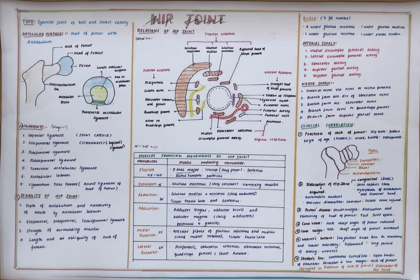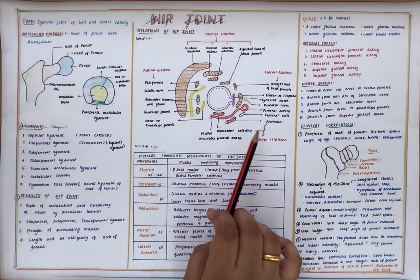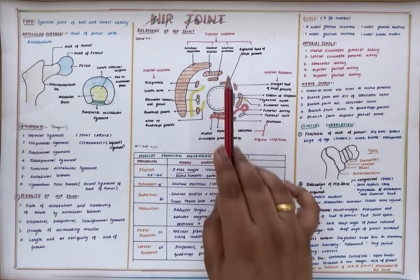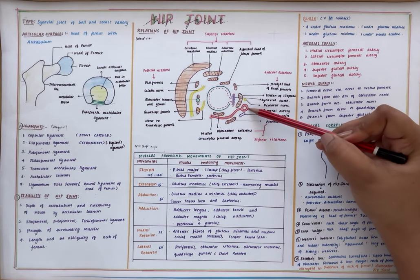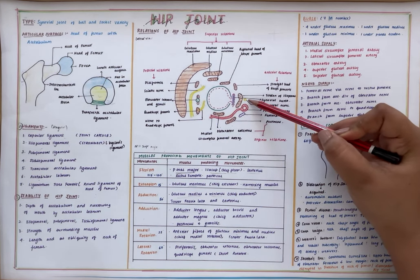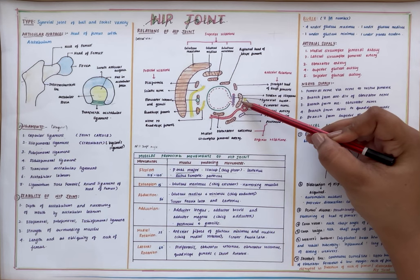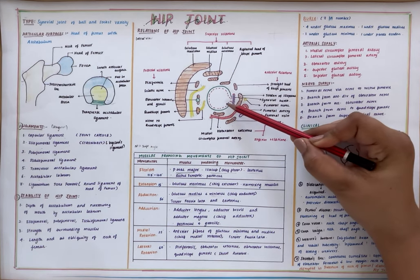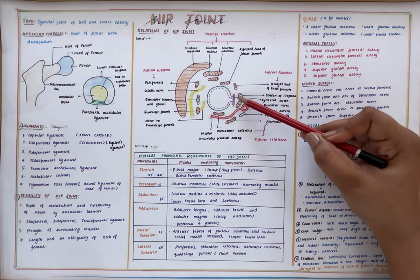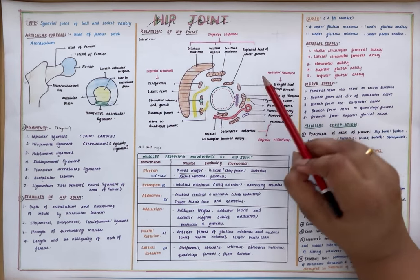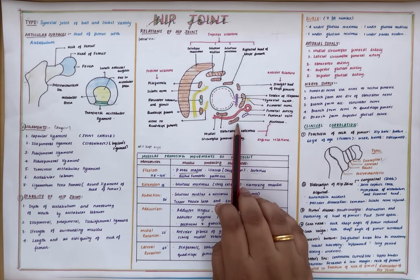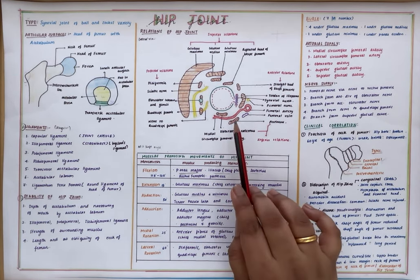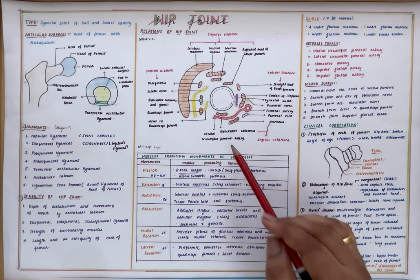Coming to the relations of the hip joint, we have anterior, posterior, superior, and inferior relations. Anteriorly, you can find the femoral artery, femoral vein, and femoral nerve. Then we also have the iliopsoas tendon, which is separated from the hip joint by a bursa. Then we have the straight head of the rectus femoris and the pectineus muscle, which is related to the hip joint both anteriorly and inferiorly.